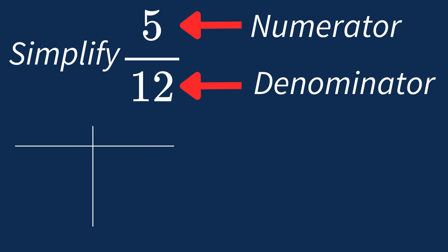First, let's list out the factors for each. For 5, the factors are 1 and 5.